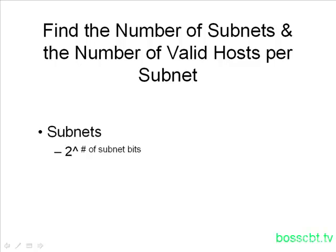So speaking of the formulas, the first one — in order to determine the number of subnets — it's very simple. It's two to the power of the number of subnet bits in the subnet mask. Likewise, in order to find the number of valid hosts in each one of the subnets you're creating, the formula is two to the power of the number of host bits in the subnet mask minus two.